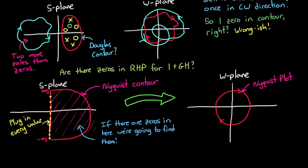So now if we take 1 plus GH and use this function to map the Nyquist contour in the s-plane into a Nyquist plot in the w-plane, we can instantly see how many times the origin is circled, and in which direction. From there, we can determine how many more poles or zeros lie within the contour.